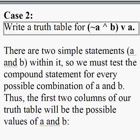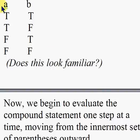Does this look familiar? The first column is true, true, false, false. The second one is true, false, true, false. Note that this takes into account all four possible combinations: when both statements are true, when just a is true but b is false, when just b is true but a is false, and when both are false.